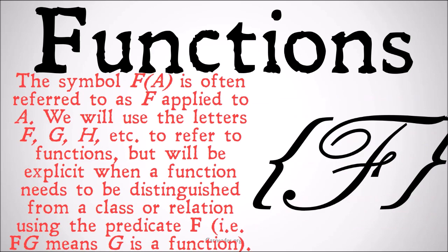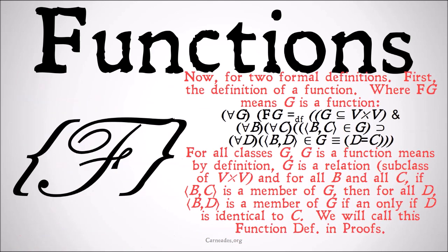The symbol f(a) is often referred to as 'f applied to a'. We'll generally use the letters f, g, h, etc. to refer to functions. But we'll be explicit when using a function needs to be distinguished from a class or a relation. Using the predicate F, i.e. Fg means that g is a function.